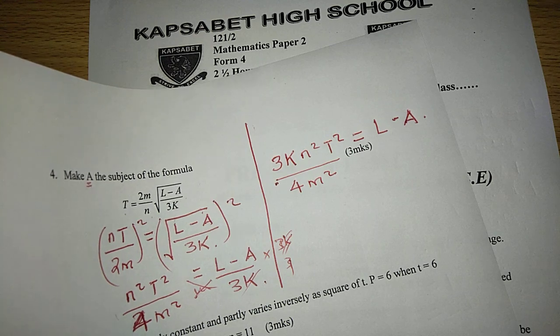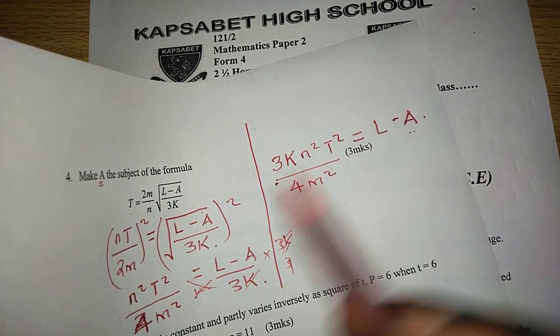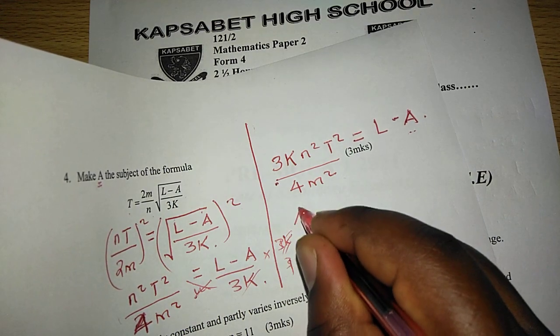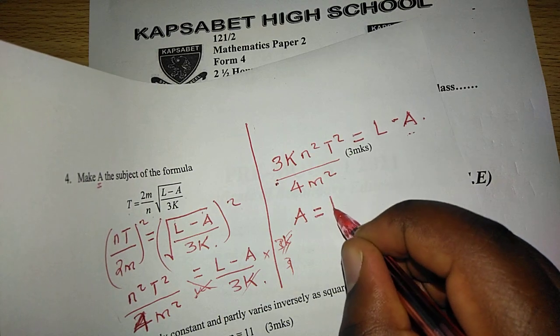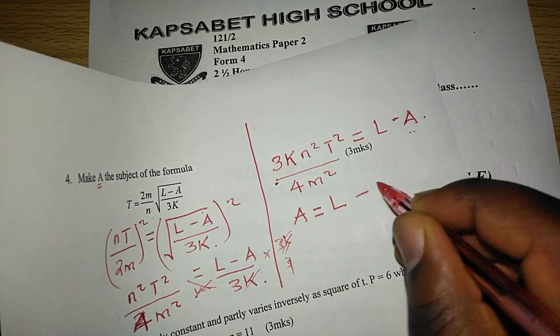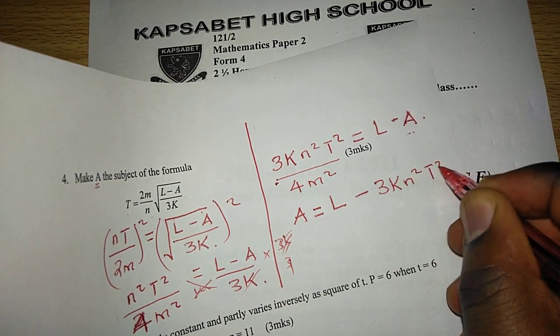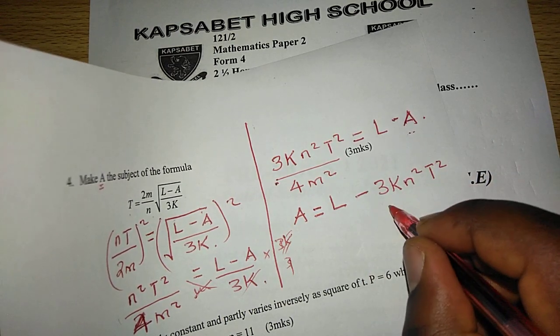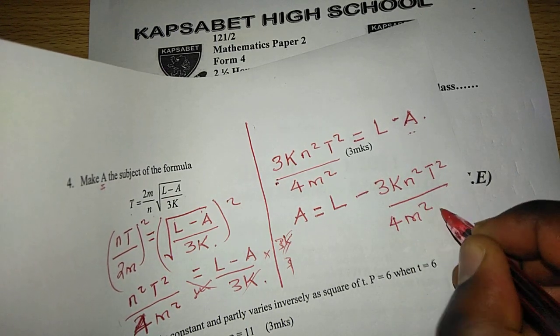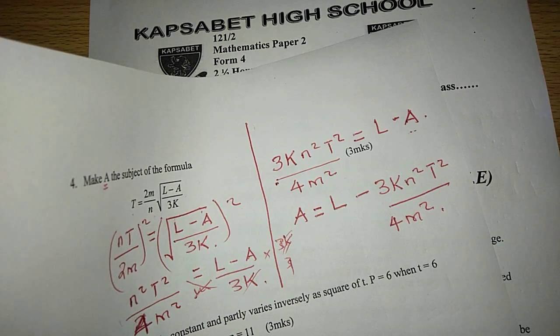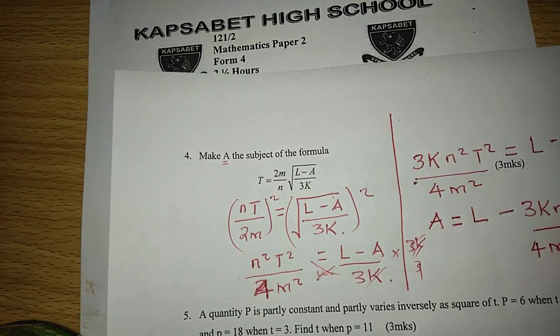Now to remain with a on one side, it means we can carry the negative a to this side such that it becomes positive, then the components which are on this side we carry them to the other side, such that now we have a equals l minus 3k n squared t squared divided by 4m squared. So that is how we operate such a question on making a given variable the subject of a formula.